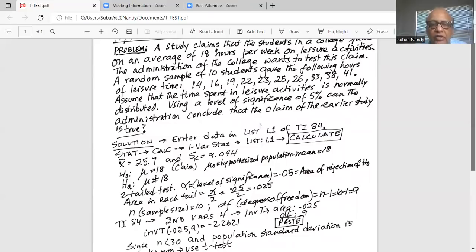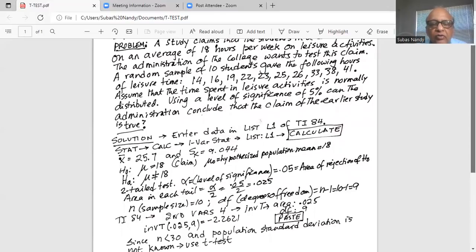So the null hypothesis status quo is mu equal to 18, and that is the claim, where mu zero is the hypothesized population mean of 18. The alternate hypothesis mu not equal to 18. Why not equal to 18? Because we have not been told that it has increased or decreased. So we cannot use greater than or less than for the alternate. So alternate is mu not equal to 18, mu being the population mean.